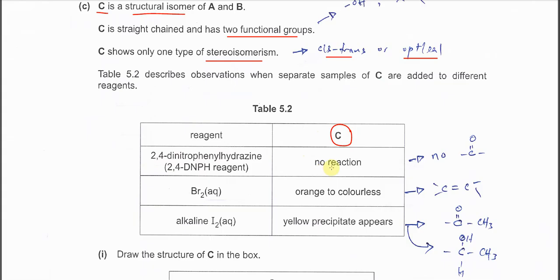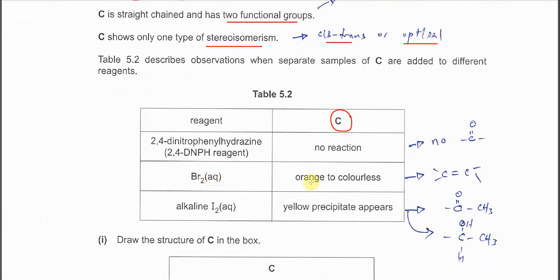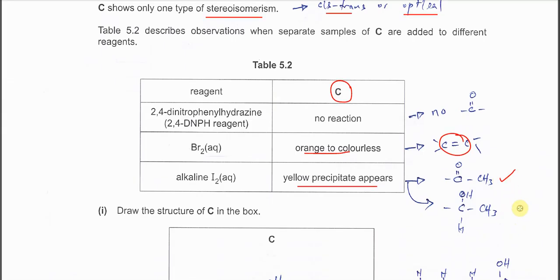And Table 5.2 tells us what is C with the three tests. 2,4-DNPH no reaction. Telling us that okay, this one doesn't have carbonyl. So means most likely it will be alcohol. And bromine test orange to colorless. Telling us that this compound must have C=C double bond. Alkaline iodine forms yellow precipitate now. So we will know okay, it has methyl ketone or this alcohol group. Since this compound C has no reaction for 2,4-DNPH, this methyl ketone is out. So the compound C must have this structure, this alcohol.